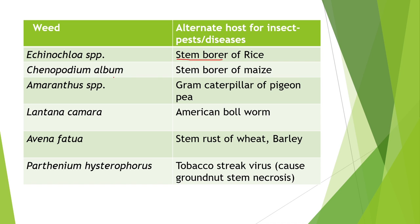Third is Amaranthus species, whose alternate host is the gram caterpillar of pigeon pea. Fourth is Lantana camara, whose alternate host is the American bollworm. Fifth is Avena fatua, also known as wild oat, whose alternate host is stem rust of wheat and barley.